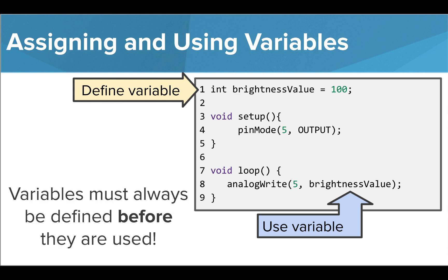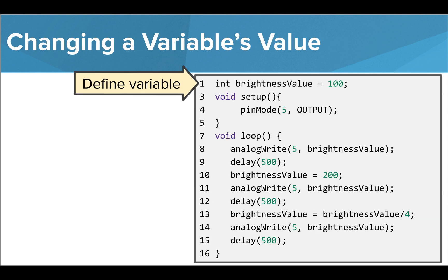So we plug it into our command where we would normally write the number for brightness. It is very important to remember that we cannot use a variable unless we have previously defined it. Once we create a variable, we can change its value throughout our code as much as we'd like. Every time we give a variable a new value, we are overriding the value it had before. Each variable can only hold one value at a time.